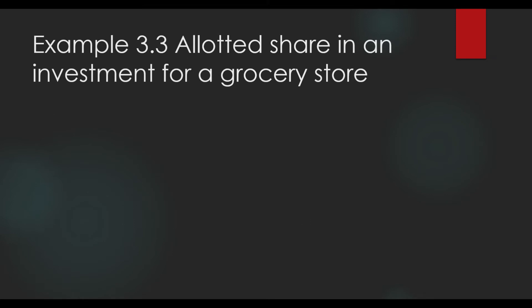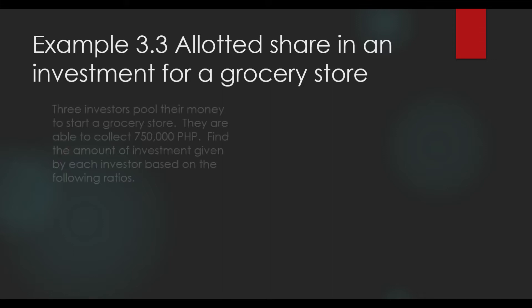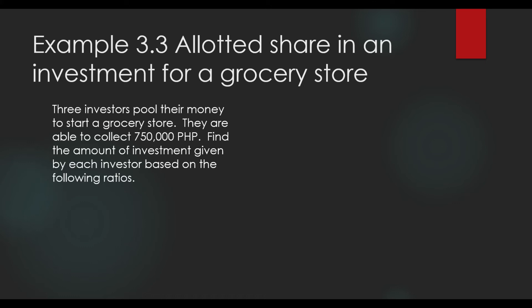Let us go straight into solving a problem. Example 3.3: Allotted Share in an Investment for a Grocery Store. Three investors pool their money to start a grocery store. They are able to collect P750,000. Find the amount of investment given by each investor based on the following ratios: five is to three is to two, and two is to one is to one. So, exactly how much money in pesos did each investor contribute to this investment?